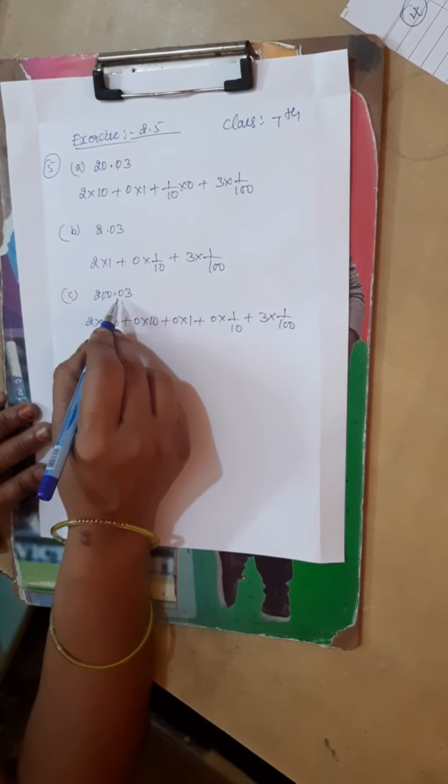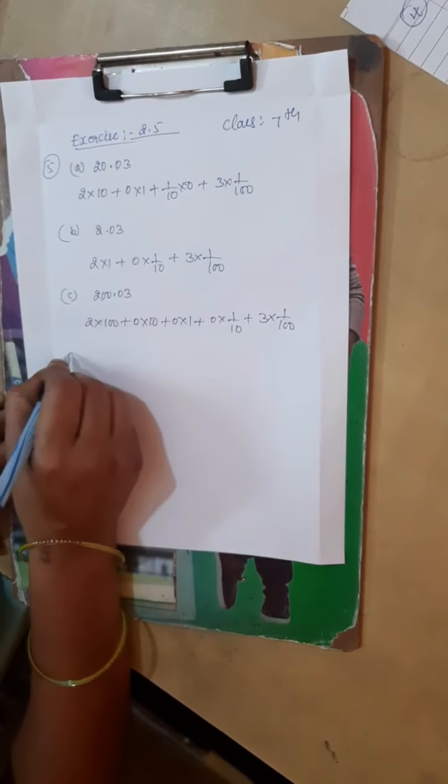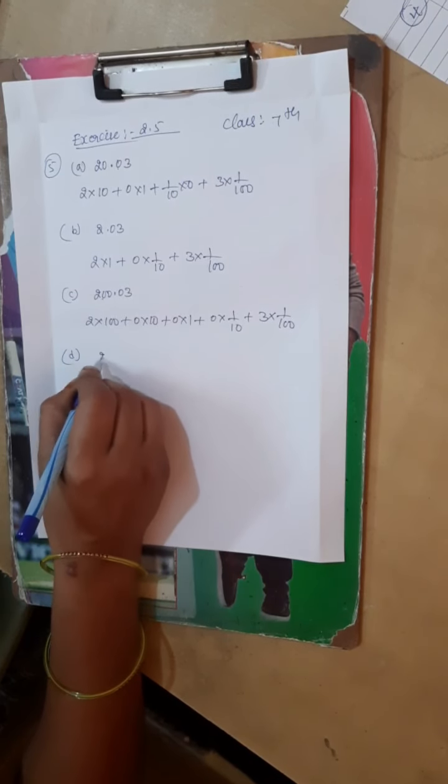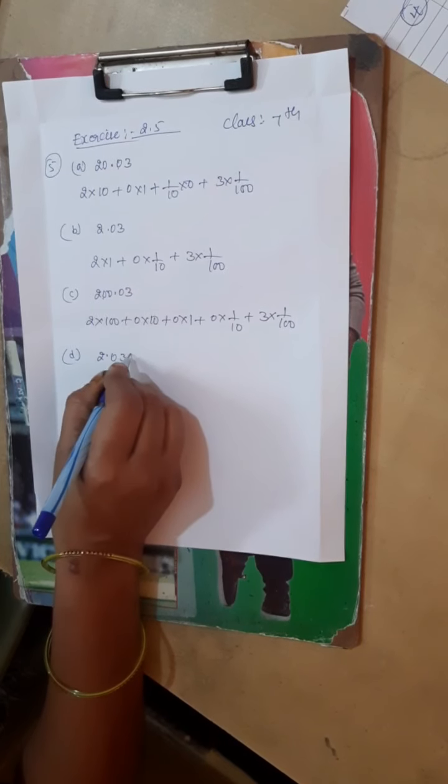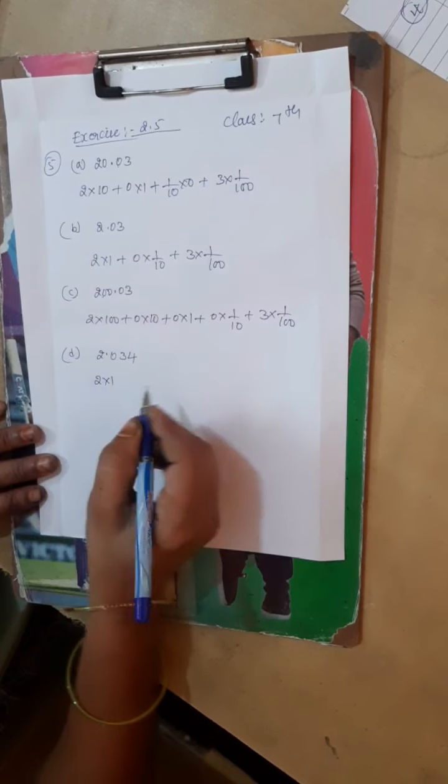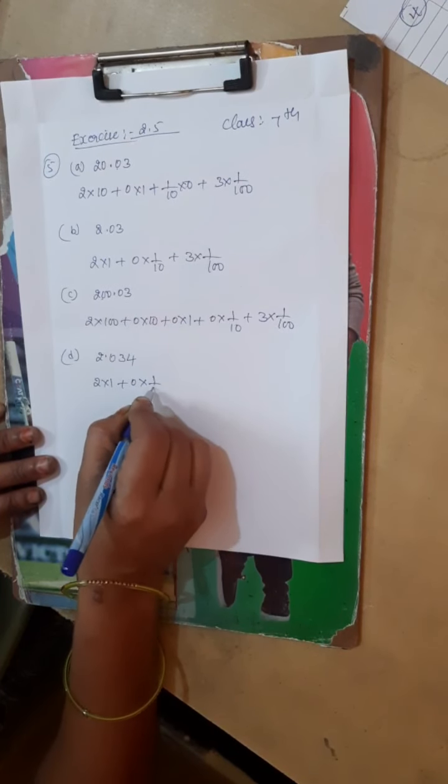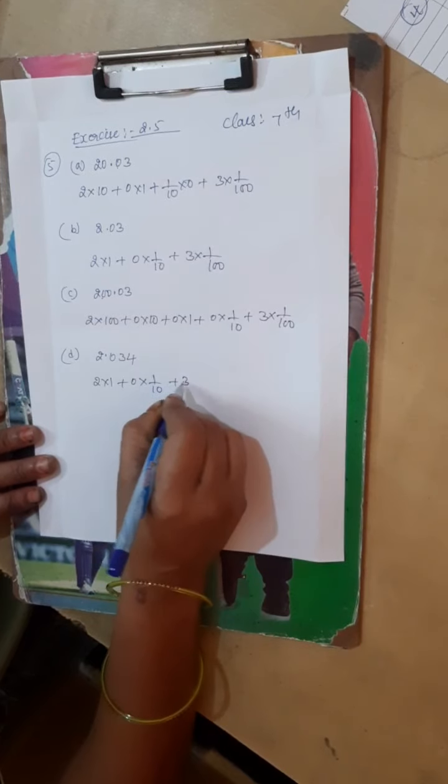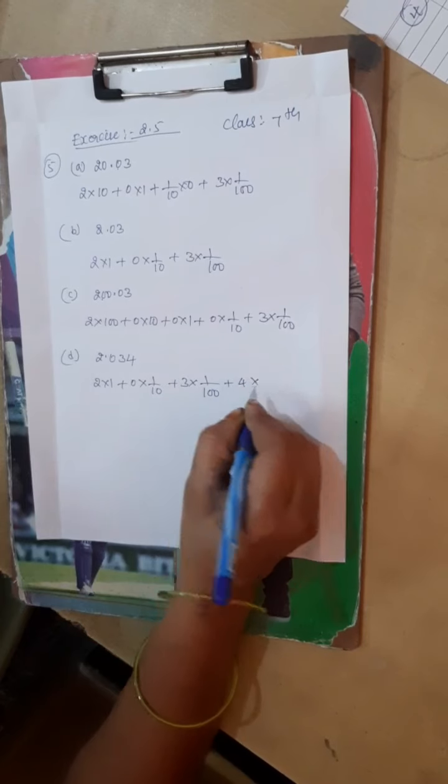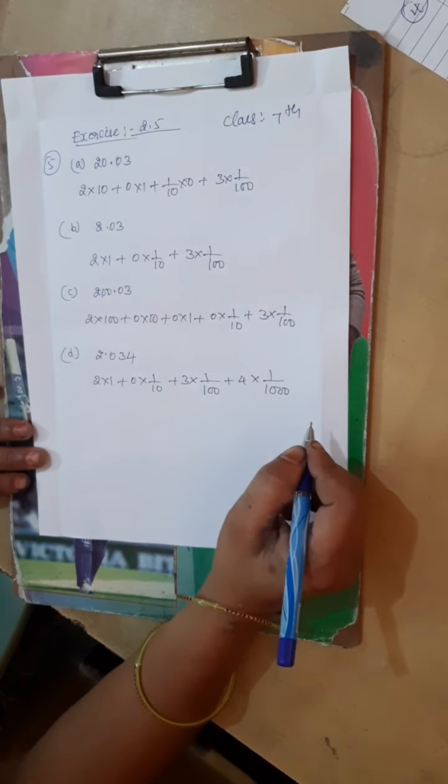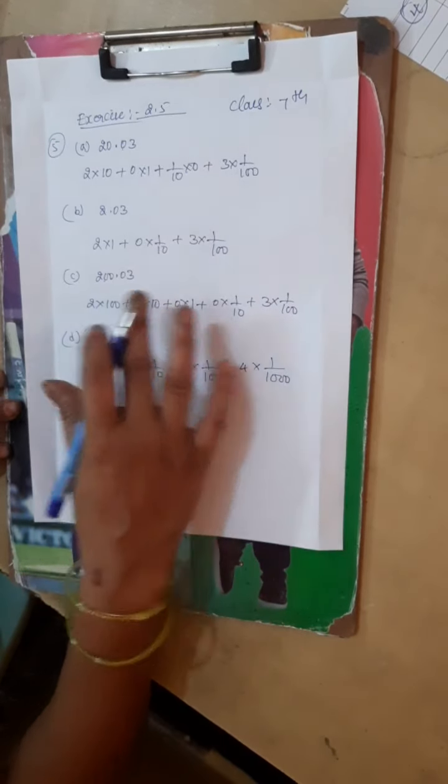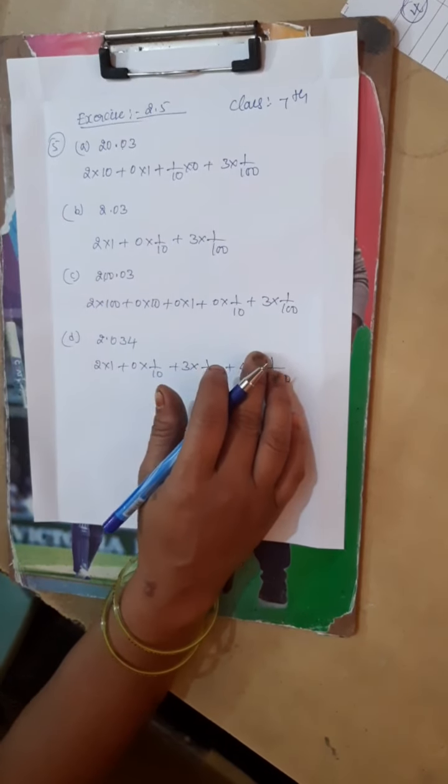Then it's fourth question D, 2.034. So this is in ones place, that is 2 into 1 plus 0 into 1/10 plus 3 into 1/100 plus 4 into 1/1000. Understand? Okay. Next.